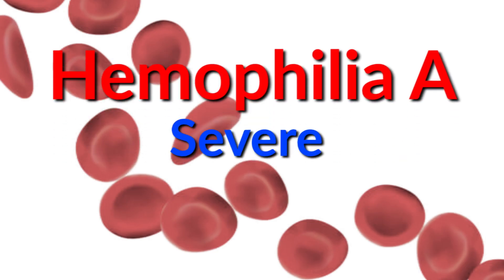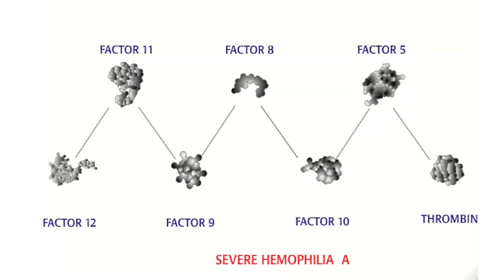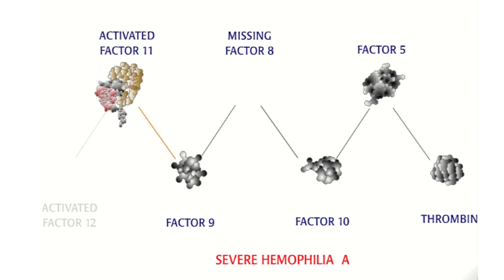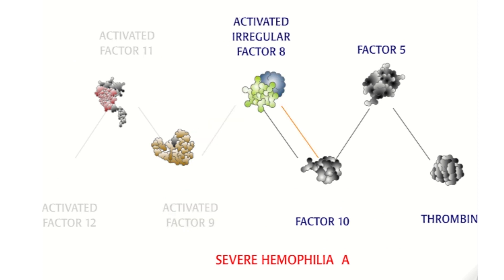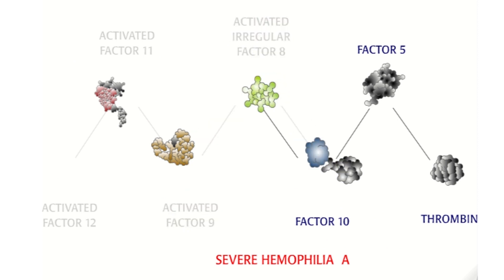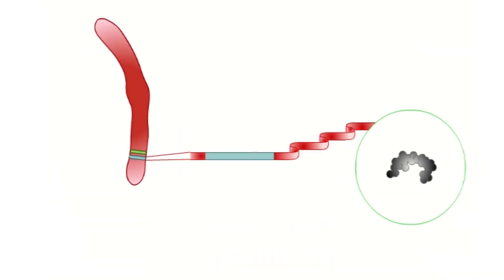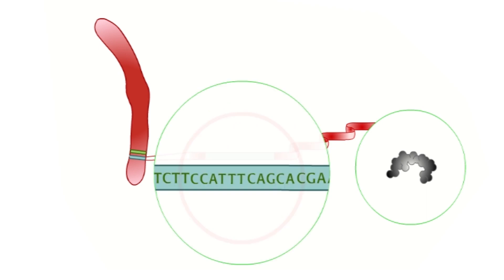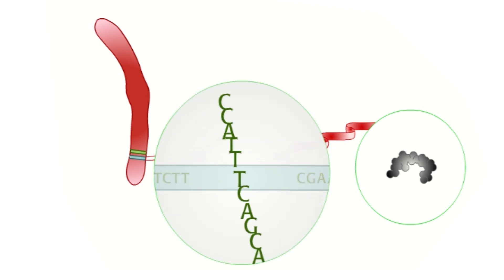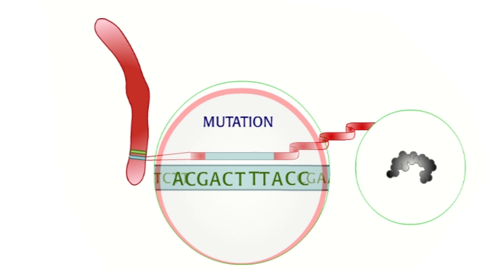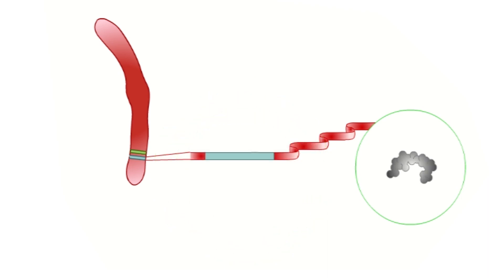In people with severe hemophilia A, factor 8 is usually absent, and the clotting cascade comes to a complete halt. Factor activity is less than 1% of normal. People with severe hemophilia A bleed spontaneously and can bleed for days after minor injuries. In these individuals, factor 8 is not present because their gene contains a much bigger mutation, like an inversion, that completely garbles the instructions for the protein — so no factor 8 can be produced.